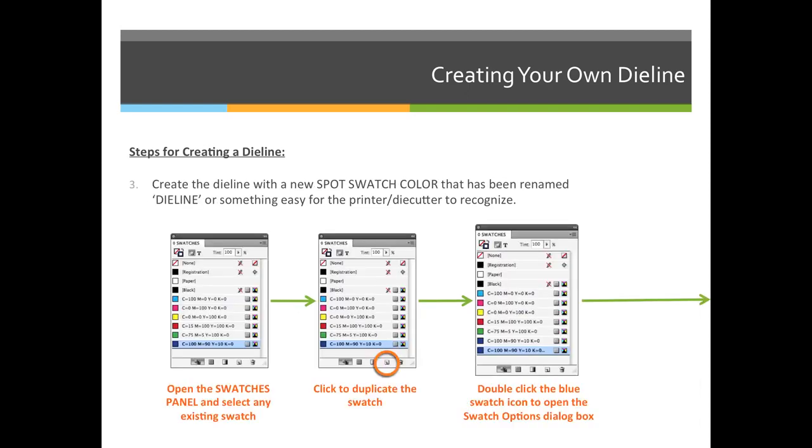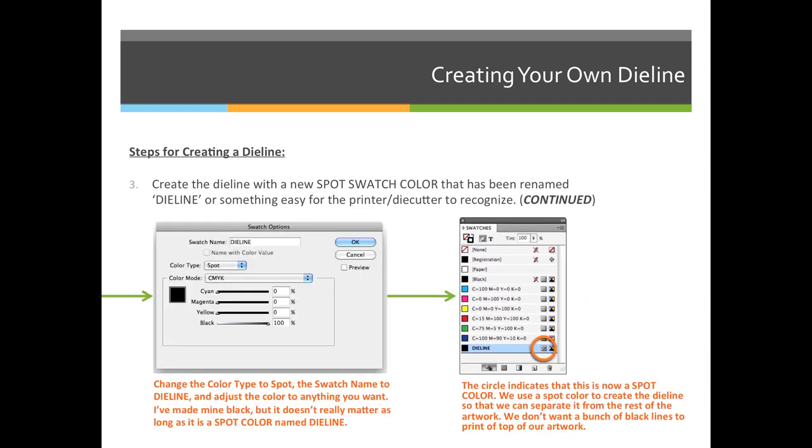Three, you're going to make sure that you use a spot color. So create a new swatch in your swatches panel, change it to be a spot color, and then change that spot color to be labeled die line. Now in the example that I'm going to show you on the next slide, I've used black, but in printing we generally use a peachy color for a die line.